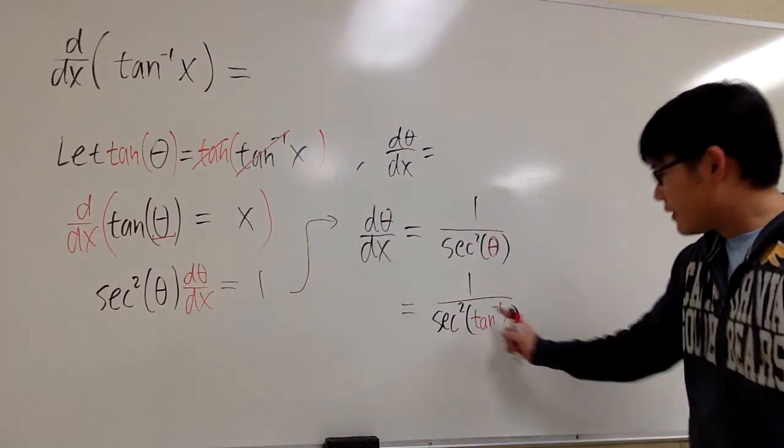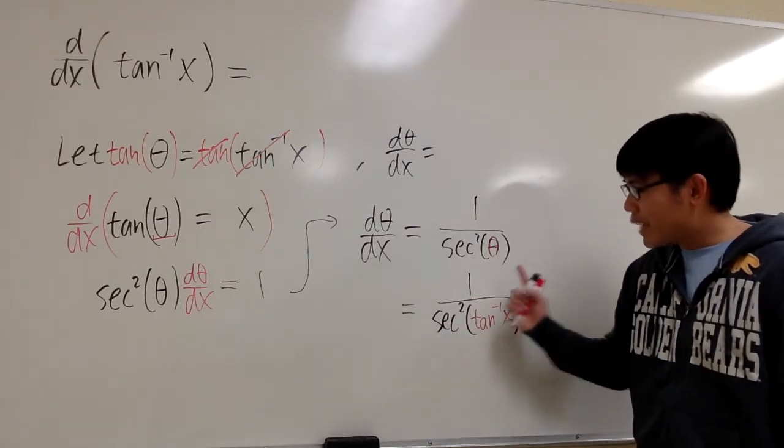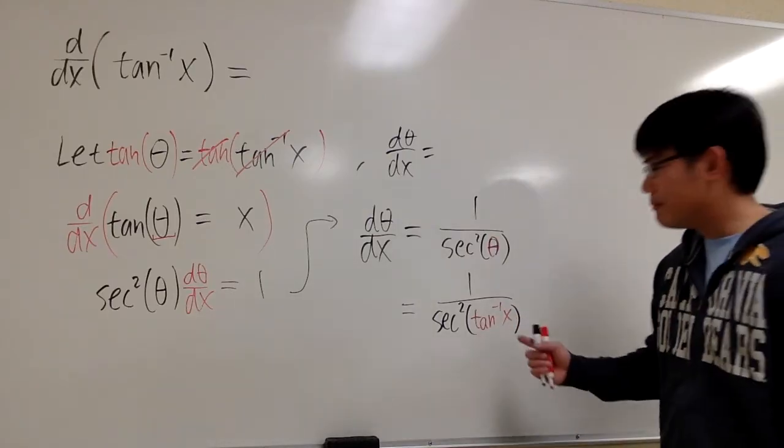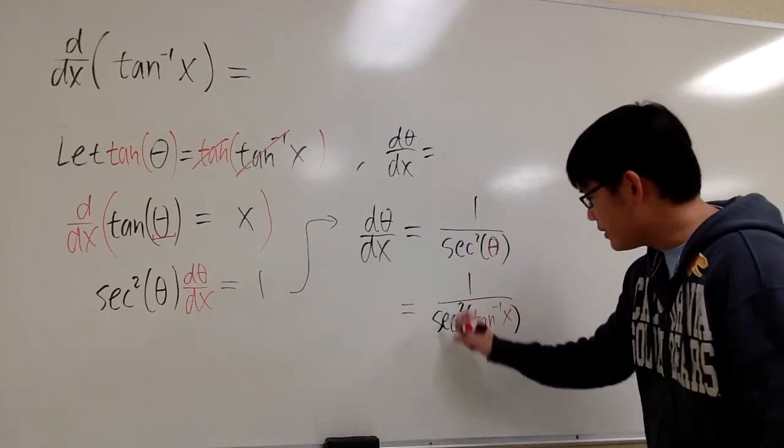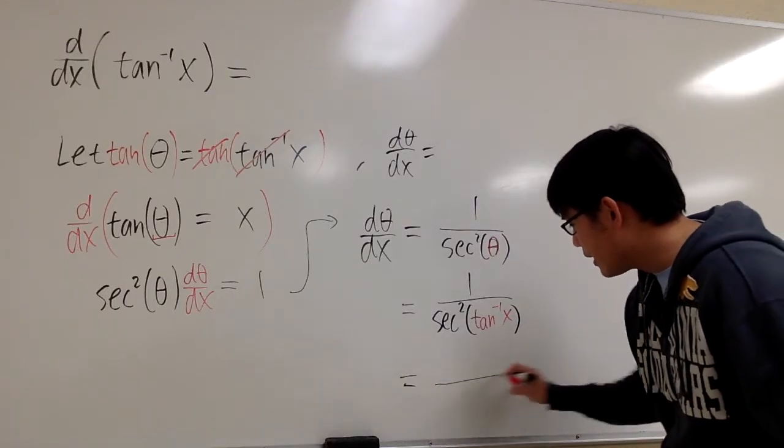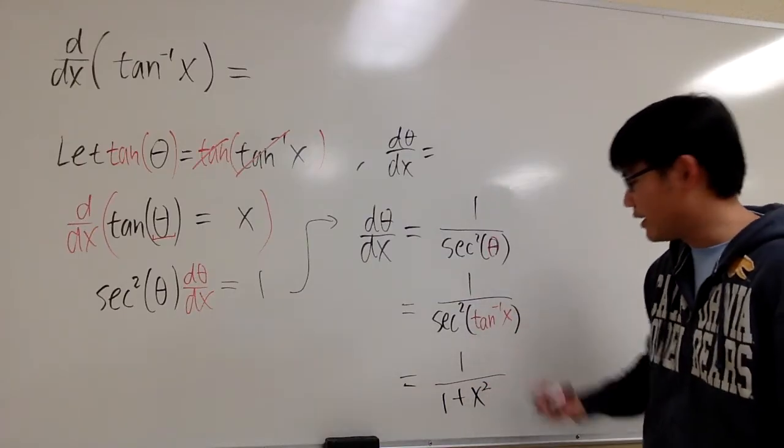The trick is, on the denominator, you can make this into an algebraic expression, and that's much better. You can check out my other videos. But let me just tell you the answer. If you work this out, on the bottom, you are going to end up with 1 plus x squared, and you still have a 1 on the top.